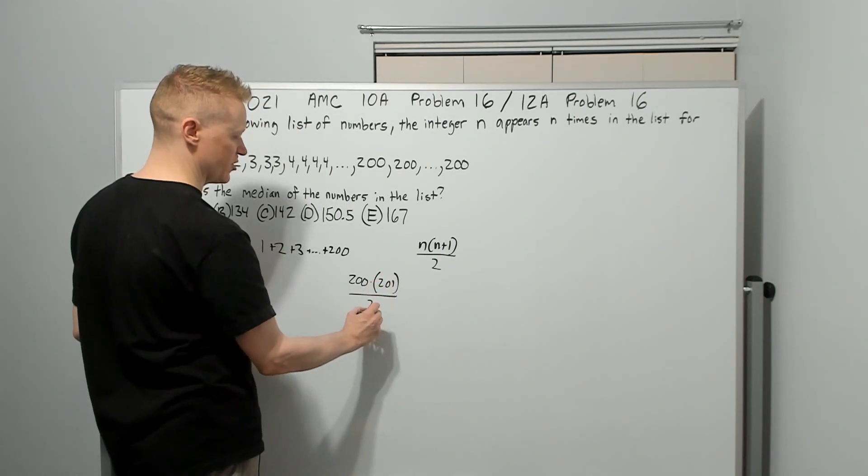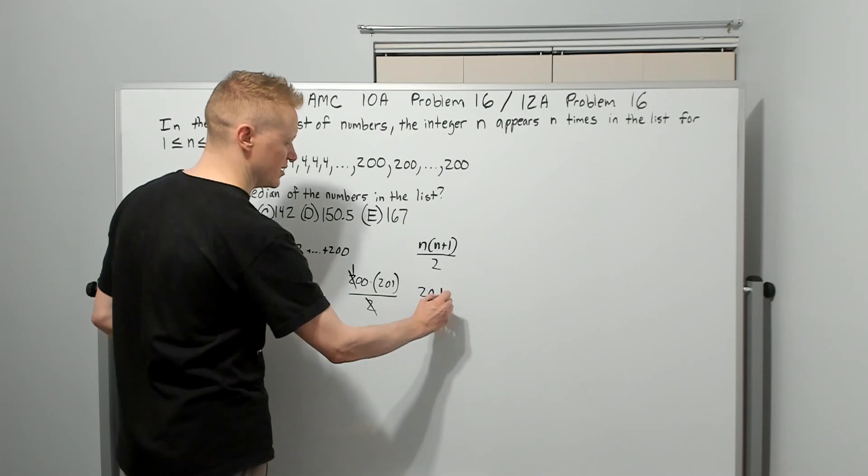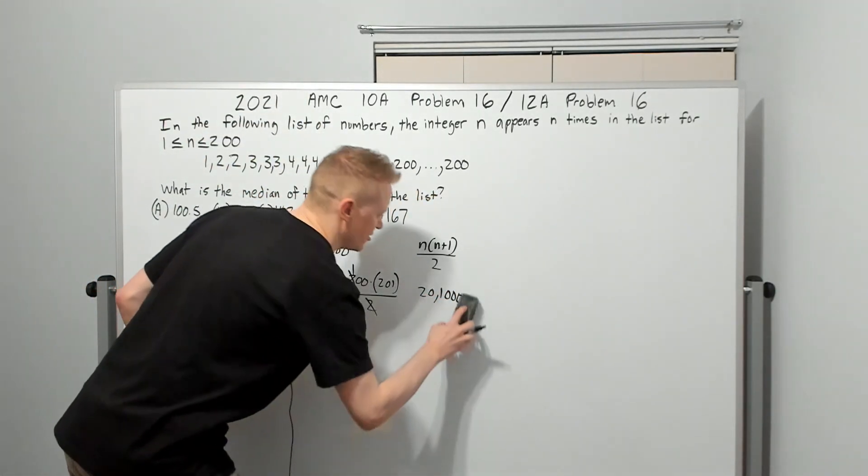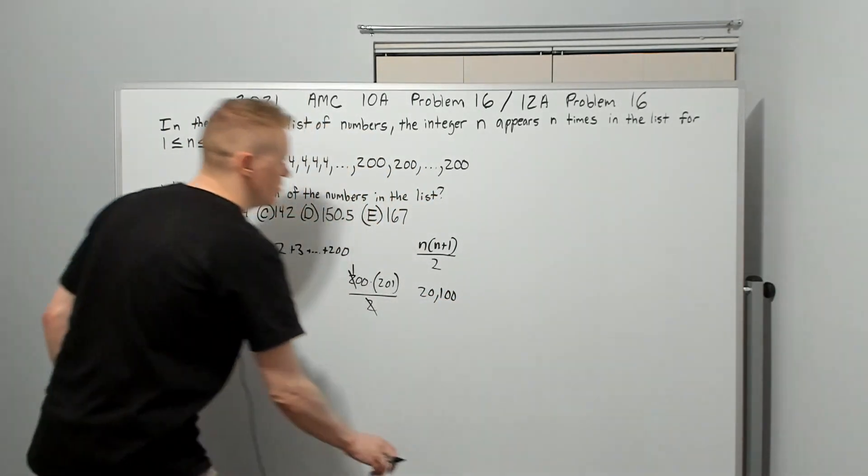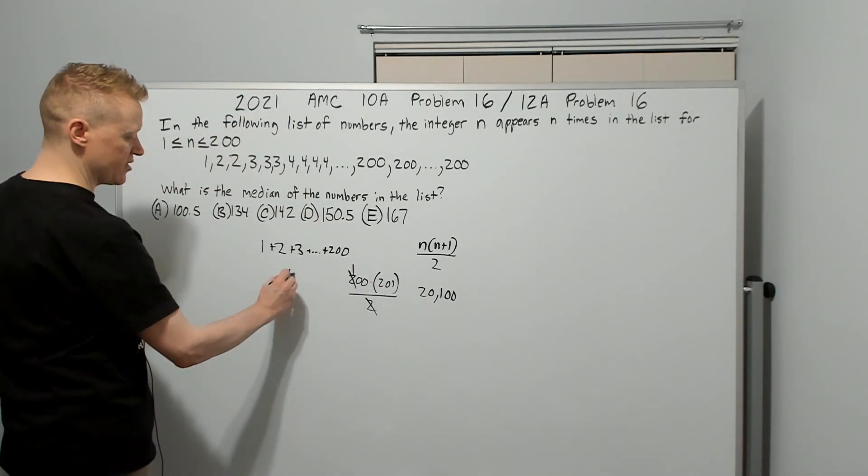201 over 2, this is going to make it 100 which is 20,100. So 20,100 is the total number of terms that we have, which means if we can get the 10,050th term...